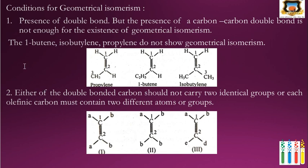The conditions for geometrical isomerism: the first condition is the presence of a carbon-carbon double bond. However, the presence of a carbon-carbon double bond alone is not enough. For example, 1-butene, isobutylene, and propylene do not show geometrical isomerism because on one of the double-bonded carbons, two identical groups or atoms are present. The second condition is that neither of the double-bonded carbons should carry two identical groups — each olefinic carbon must contain two different atoms or groups.